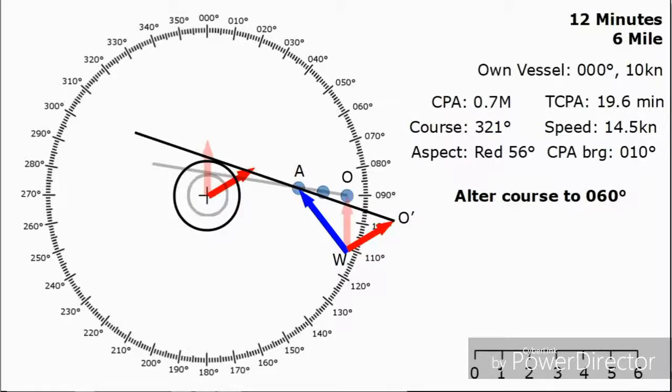Now that we've got our relative line of approach, we can put on the ring to work out our new closest point of approach and the new bearing to the closest point of approach. We also need to know the new TCPA. We need to measure the new imaginary distance O prime to A, and we know that the plot length is still 12 minutes. We know that the other vessel's imaginary plot here has travelled 3.8 miles in 12 minutes.